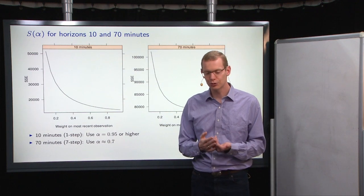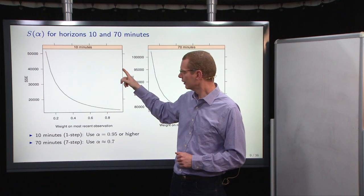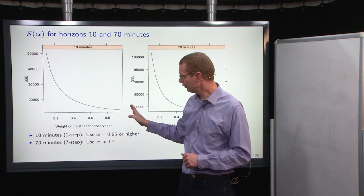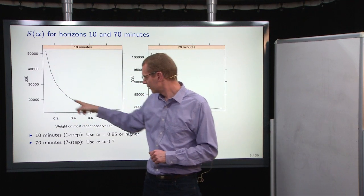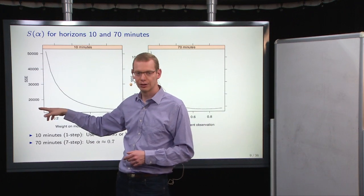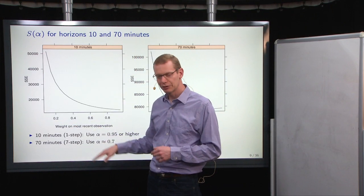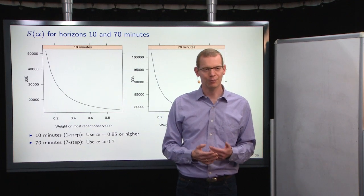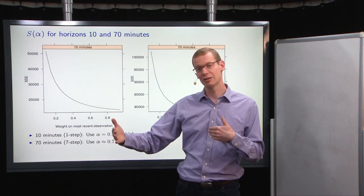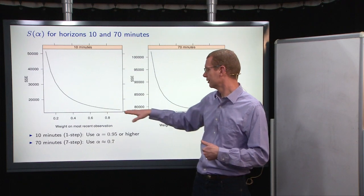Now, if we use the 10-minute forecast here corresponding to L equals 1, then if we calculate S of alpha for a range of different alphas, what we see is that the higher the alpha that we use, the lower the sum of squared prediction errors. So basically that means we should use something that gives much higher, most weight on the most recent observation. The best 10-minute estimator is effectively to just use the previous observation.